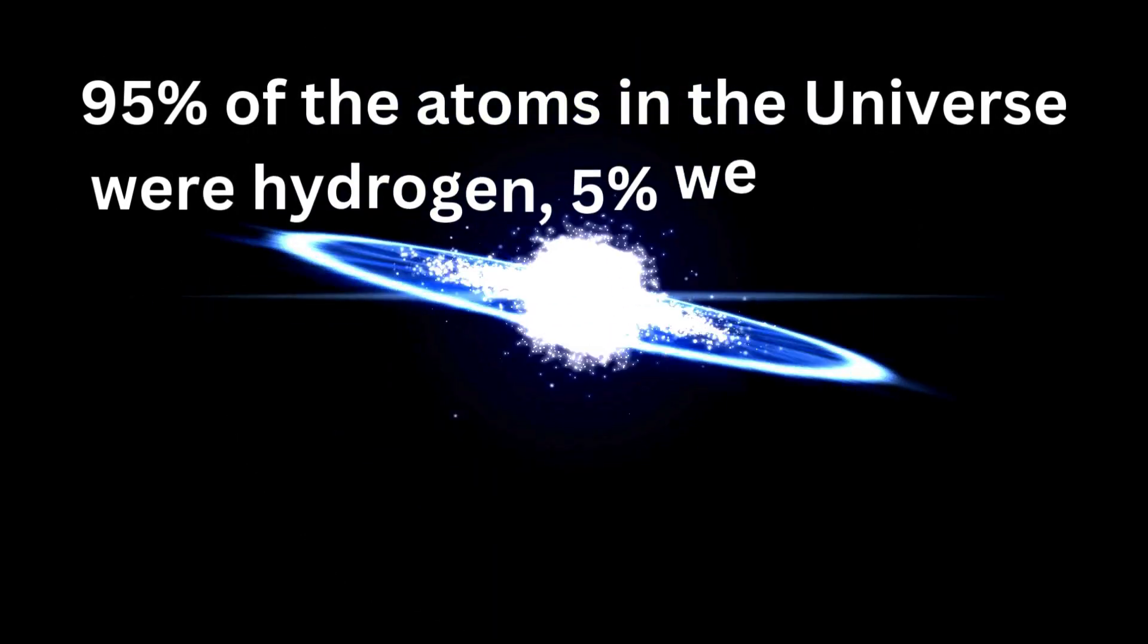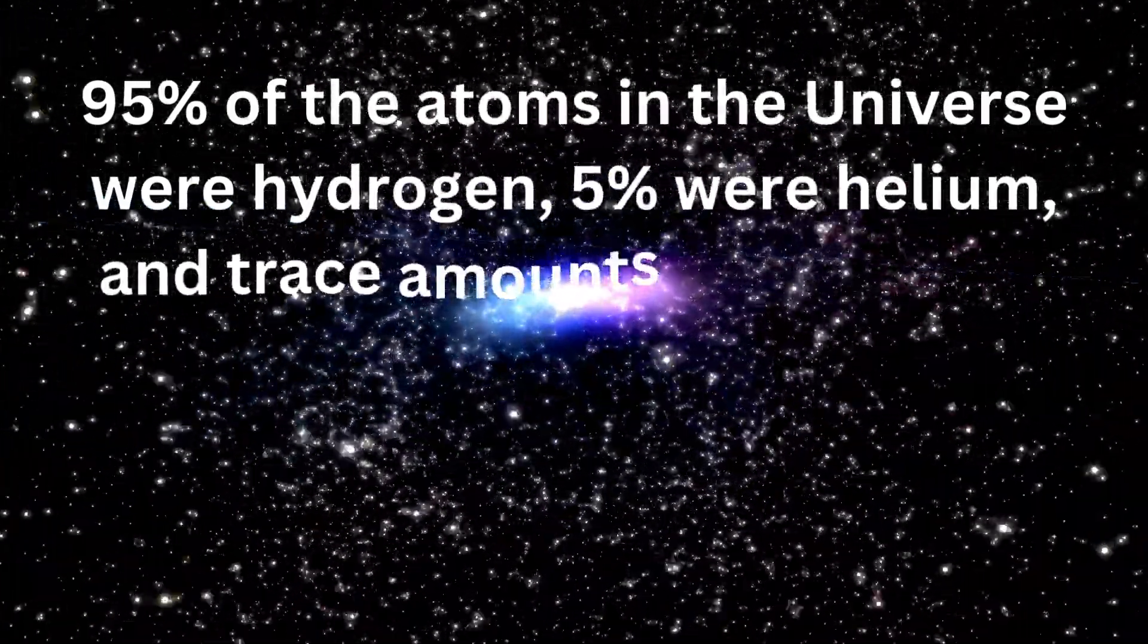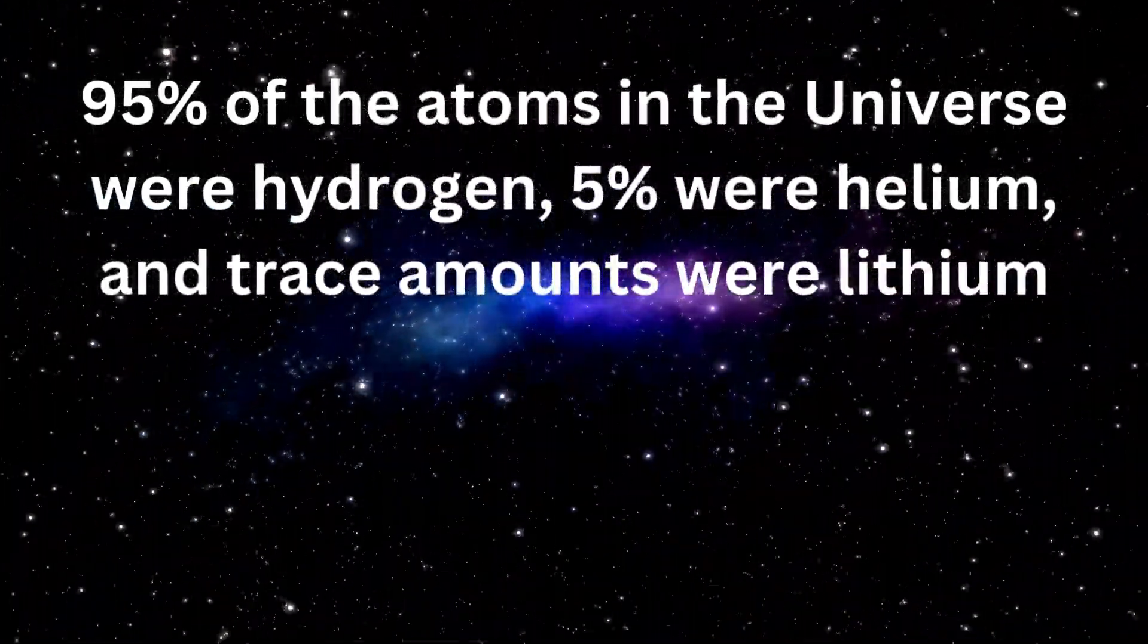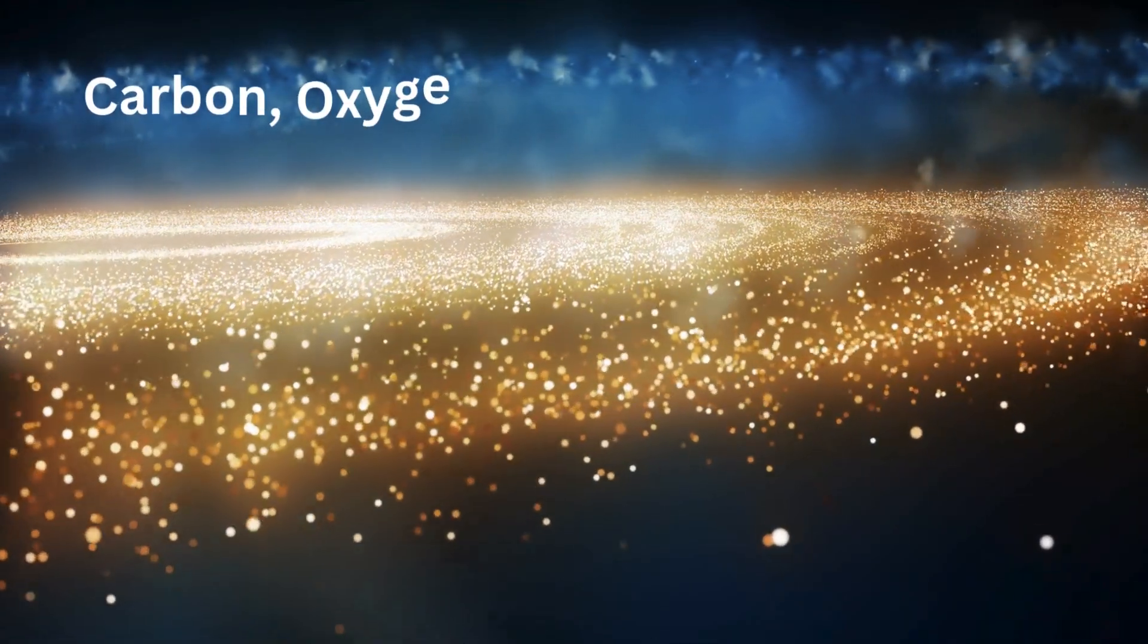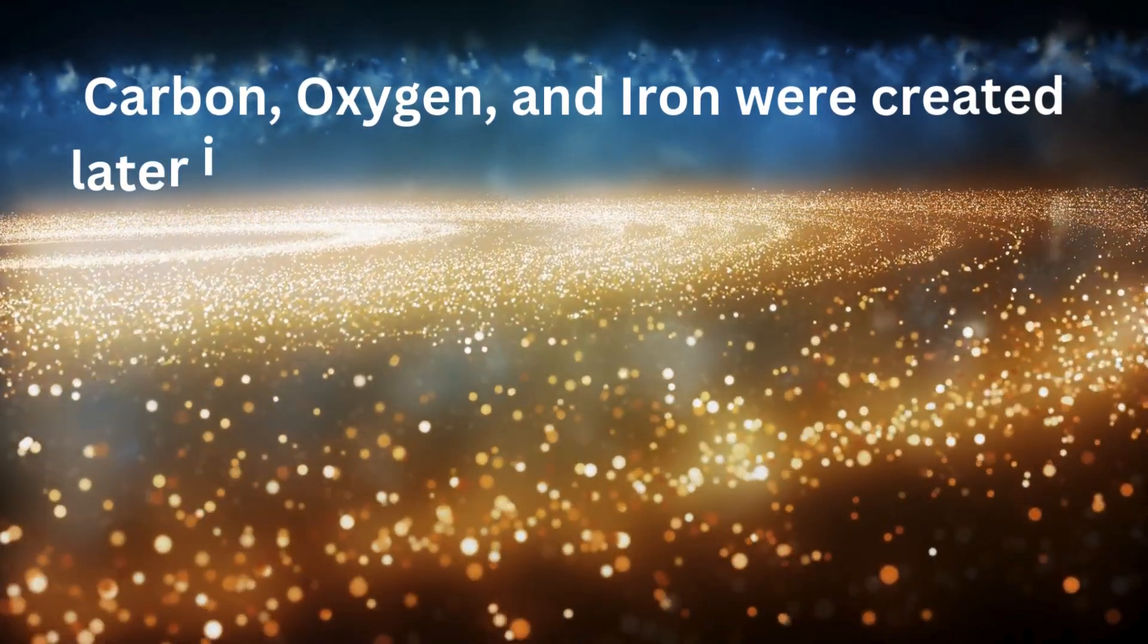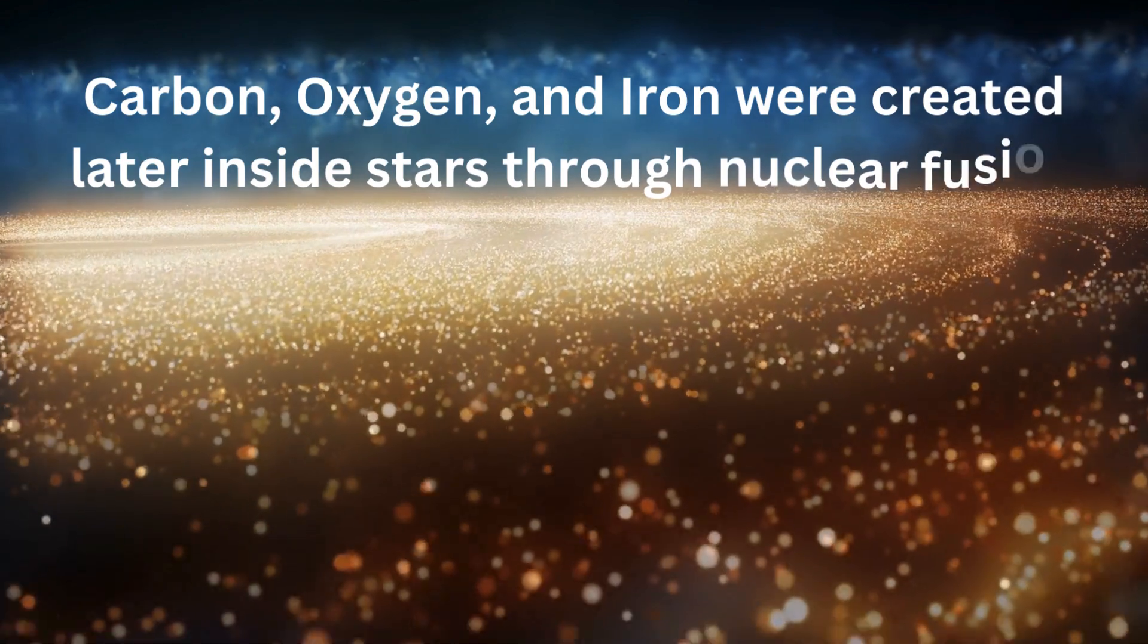When the universe was formed, the primary element created was hydrogen. 95% of the atoms in the universe were hydrogen, 5% were helium, and trace amounts were lithium. This occurred within the first few minutes after the Big Bang. Heavier elements like carbon, oxygen, and iron were created later inside stars through nuclear fusion processes.